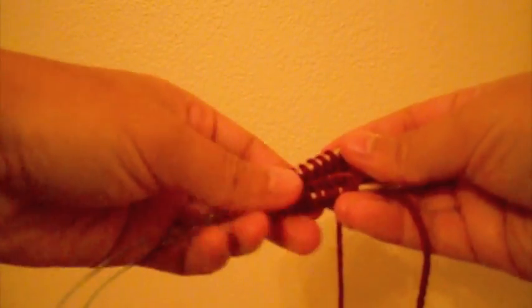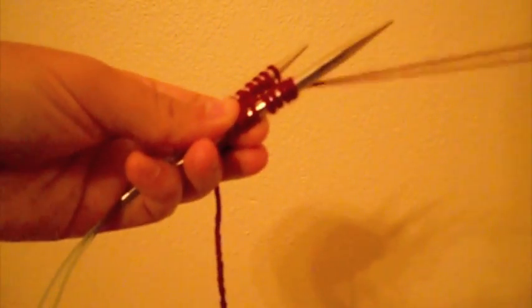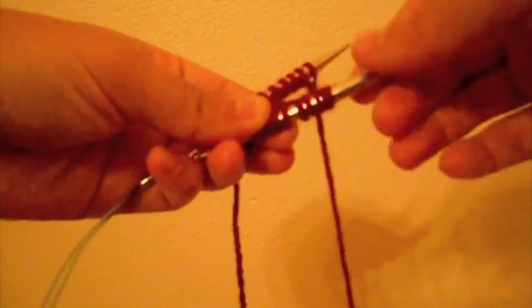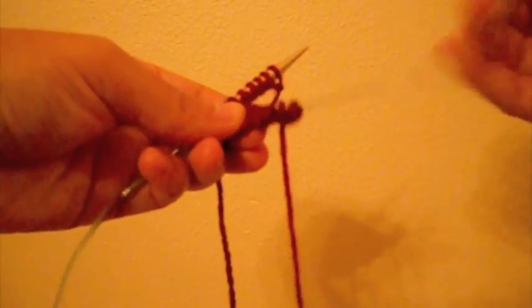Once your stitches are on the needles, make sure that the yarn that you'll be knitting with is on the front needle. And now take the stitches on the front needle and move them back onto the cable.